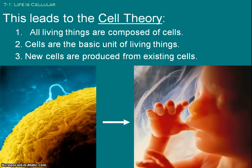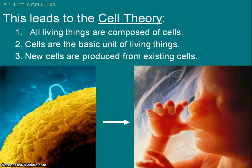All of their observations, as well as many observations by many different scientists, contribute to what we call the cell theory. The cell theory states that all living things are made up of cells. That cells themselves are the basic unit of living things — meaning if you break down living things to their simplest parts, you're going to have a cell. And that new cells come from pre-existing cells. There had to be a first cell, but everything from that first cell on came from another cell that was already in existence.